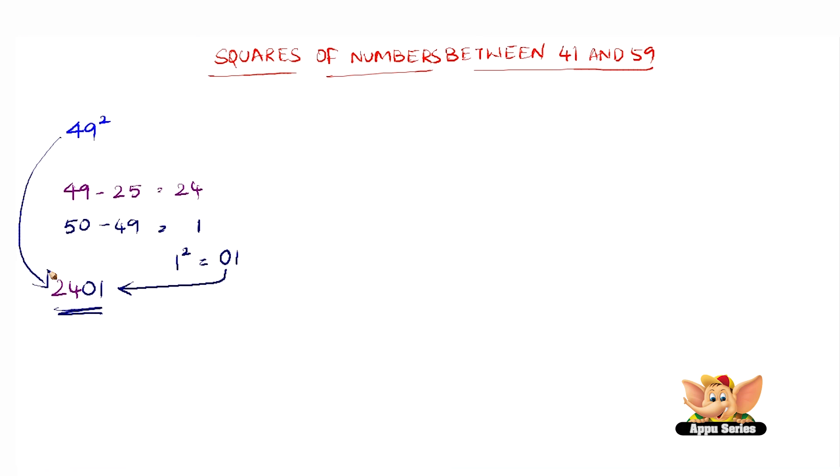Let us quickly choose another example, 53 square. So what we have to do here is again subtract 25 from 53. We get 28. 28 is going to be the first two digits of the answer of 53 square.